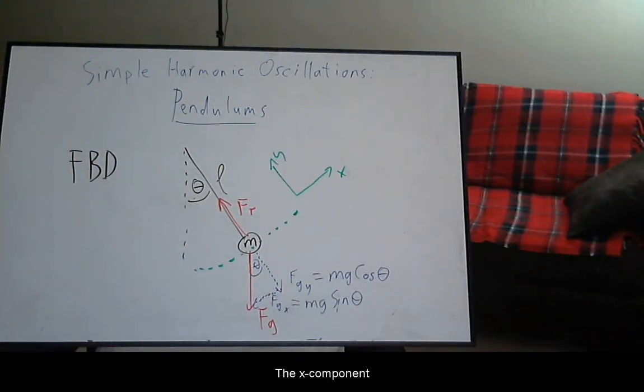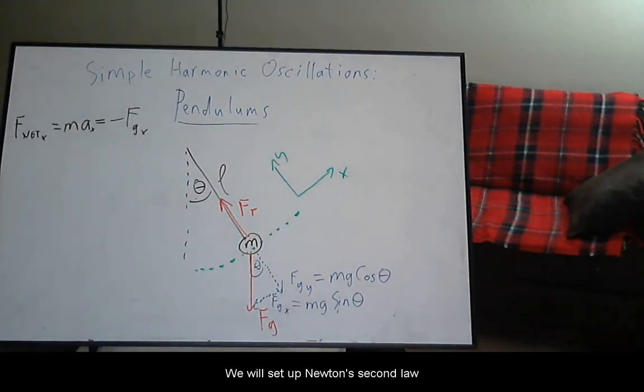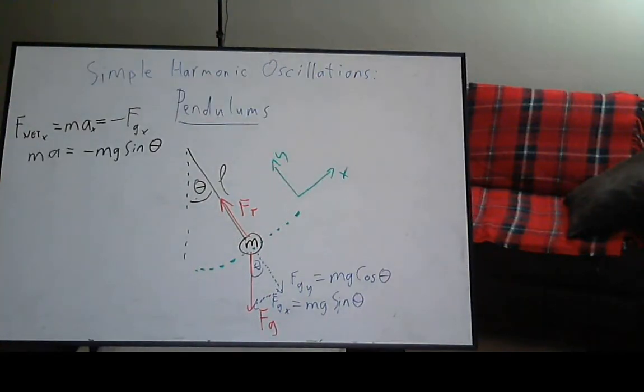We will then break gravity into its components. The x component is the sine component. We will set up Newton's second law in the x direction. The negative sign comes from the fact that the displacement, in this case proportional to theta, is opposite the restoring force.